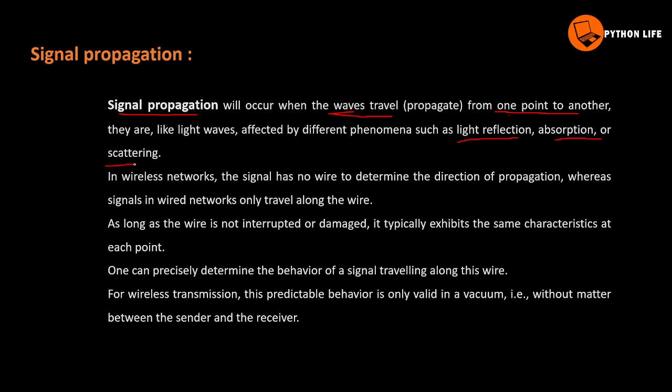In wireless media, the signal has no way to determine the direction of propagation, whereas signals in wired networks only travel along the wire. As long as the wire is not interrupted or damaged, it typically exhibits the same characteristics at each point.